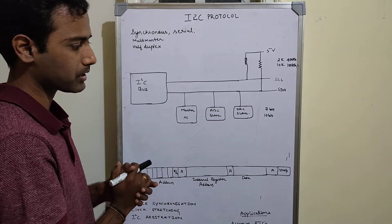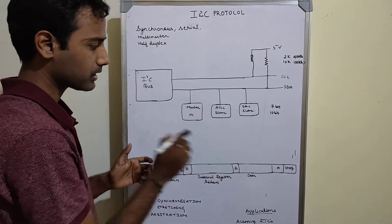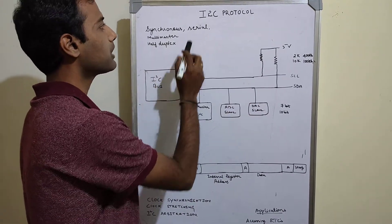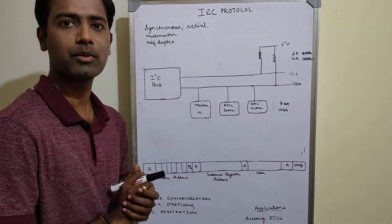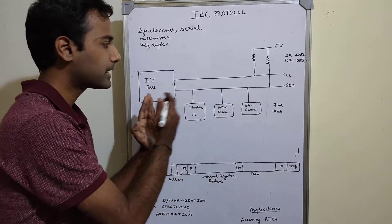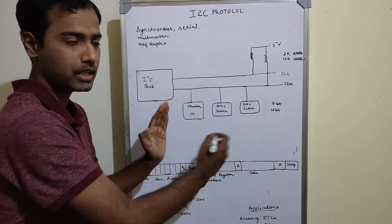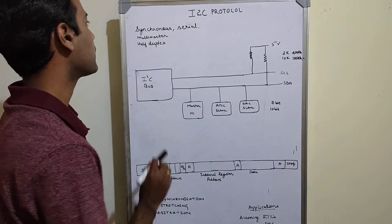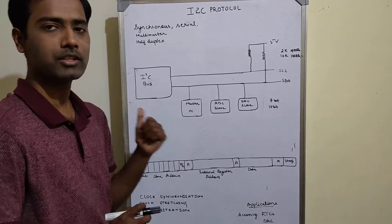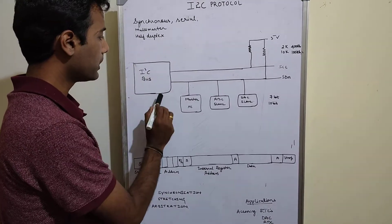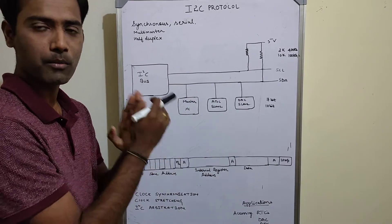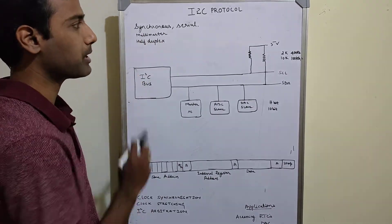This is actually an acknowledgement-based protocol — we will discuss that in more detail later. Serial communication means data is sent bit by bit, one after the other. I2C is also a multi-master protocol, meaning we can have multiple masters as well as multiple slaves.